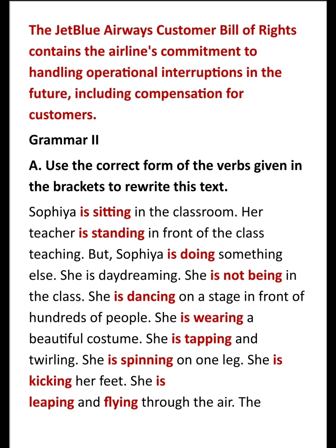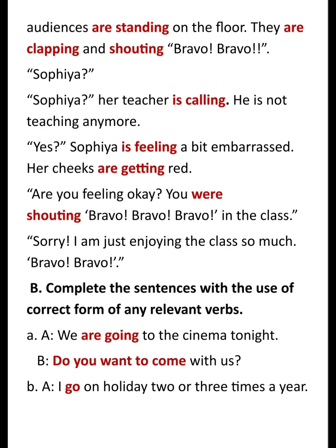Grammar 2. A. Use the correct form of the verbs given in the brackets to rewrite this text. Sophia is sitting in the classroom. Her teacher is standing in front of the class teaching, but Sophia is doing something else — she is daydreaming. She is not being in the class; she is dancing on a stage in front of hundreds of people. She is wearing a beautiful costume. She is tapping and twirling. She is spinning on one leg. She is kicking her feet. She is leaping and flying through the air. The audience are standing on the floor.